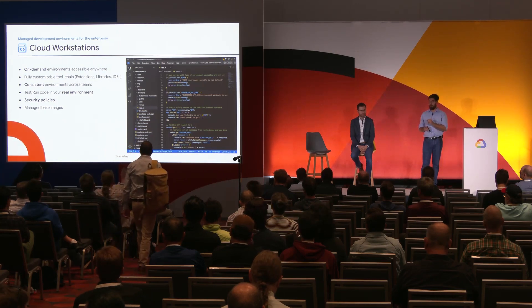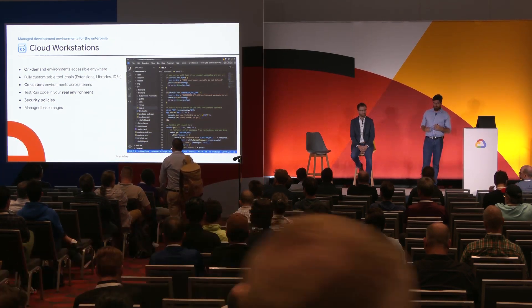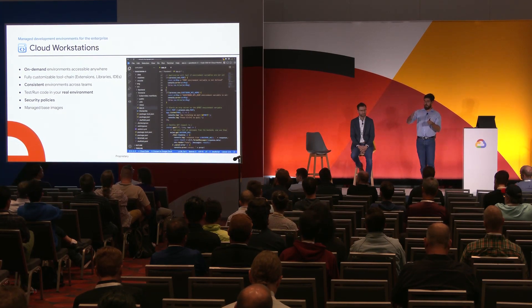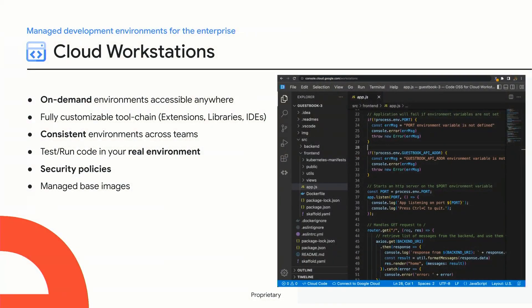Another key focus is consistency among development environments. With Workstations, you can define a golden workstation configuration that is consistent across your developers. For example, if you're a team working on Java with a JDK and Spring, you can have all those tools pre-installed and ready to use. And all of this is built with security in mind — compliance, security, and data exfiltration mechanisms are built in so you can have an improved developer experience without sacrificing security.